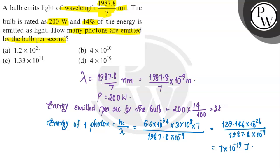Let n photons be evolved per second. So that will be equal to n × 7 × 10^-19 equals 28. From here, the n value will be 4 × 10^19.